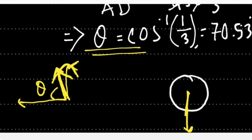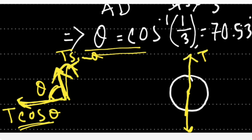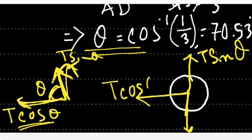Now resolve the tension into components. Since theta is the angle that tension makes with the x-axis, the x-component is T cos theta and the y-component is T sin theta. In FBD, you always divide forces into x and y components, and the two component directions are always at 90 degrees to each other.